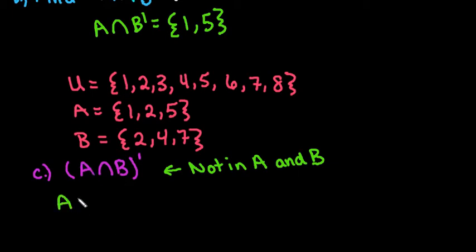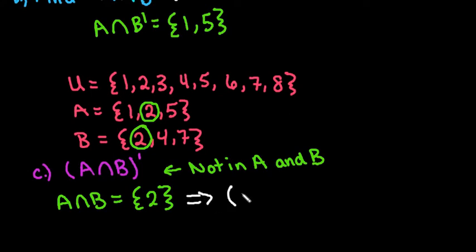So if we find A ∩ B first, remember that's what A and B have in common. So A and B have 2 in common. And so for this one, what we would do is then after we find this part here, we would find the complement.